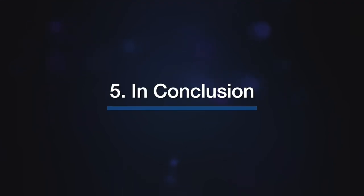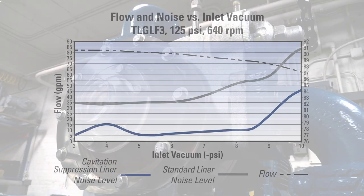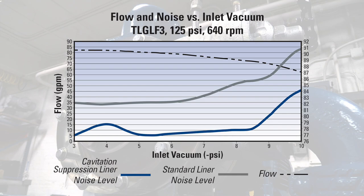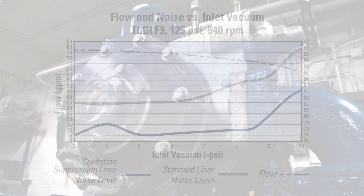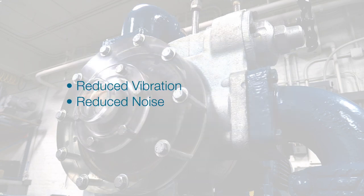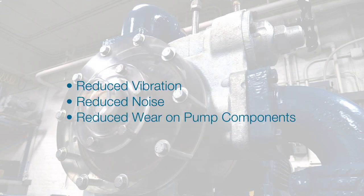To summarize our findings, the unique characteristics of the Blackmer cavitation suppression liner can greatly reduce the damaging effects of cavitation by managing the entrained gas bubbles inside the pump. As seen on this graph, the positive results can lead to a measurable reduction in vibration, noise levels, and ultimately reduced wear and tear on internal pump components. This technology is especially beneficial when NPSH required is greater than NPSH available.